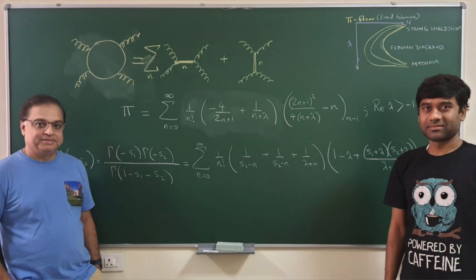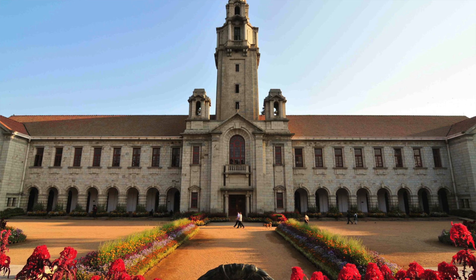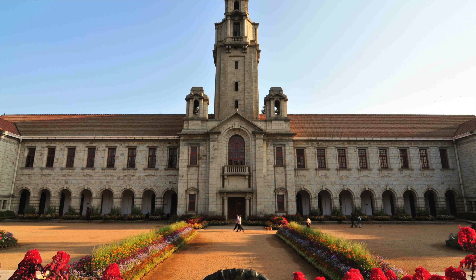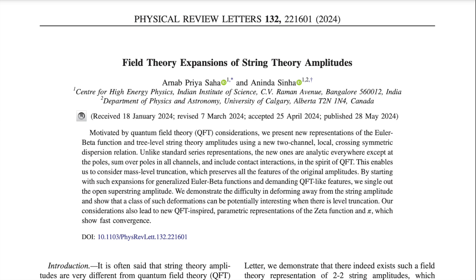Scientists have recently accidentally discovered a whole new formula for pi, and that's what we're going to talk about in today's video. Saha and Sinha, who work at the Center for High Energy Physics at the Indian Institute of Science, published a paper called 'Field Theory Experiments of String Theory Amplitudes', and in this paper they represent their new formula for pi.